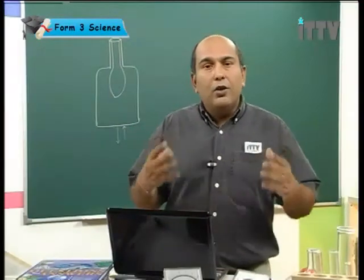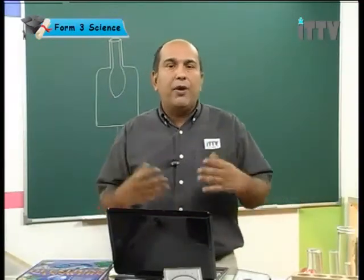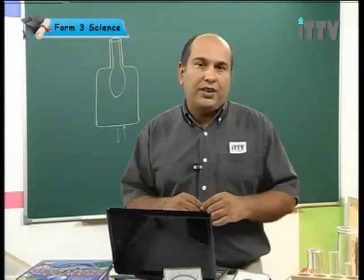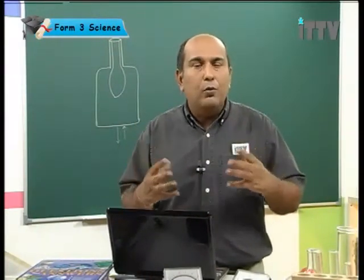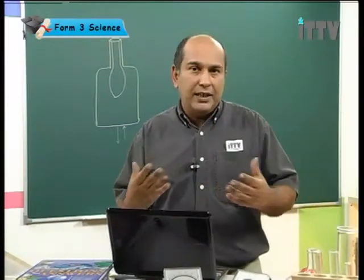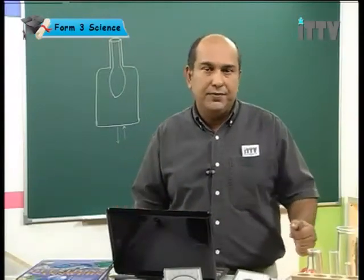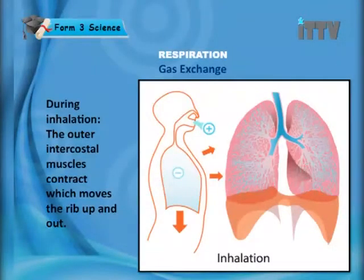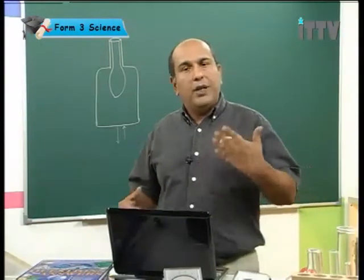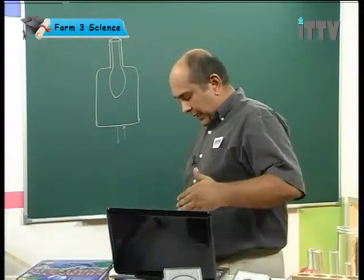Now that we've had a look at that model and how it represents our breathing mechanism, let's look at the actual breathing mechanism process — how we actually increase or decrease the volume during inhalation and exhalation. During inhalation, the outer intercostal muscles contract, which move the ribs up and out. If you were to breathe in and breathe out at home, you'd be able to see this.